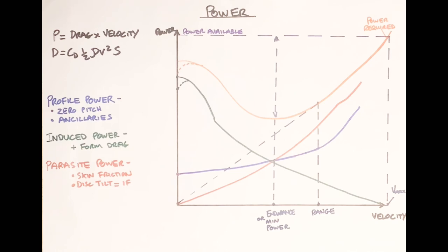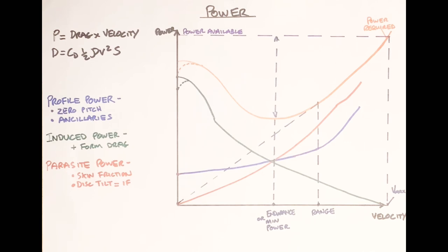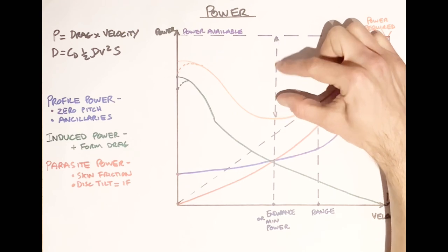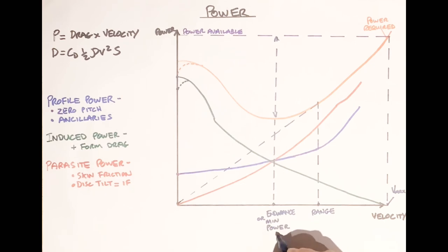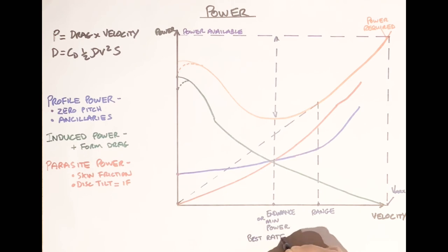The best rate of climb is where you get the highest figure on your VSI — the most feet per minute going upwards. To increase rate of climb, you pull collective. So the speed for best rate of climb is where we have the most freedom to manoeuvre the collective — our highest power margin. This means the best rate of climb speed coincides with our endurance or minimum power speed.